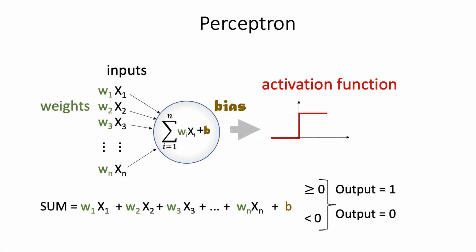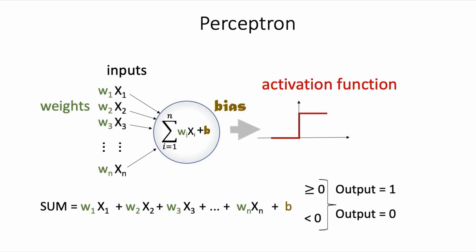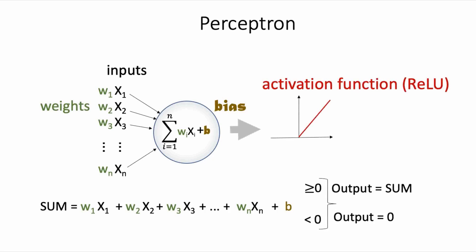In our examples, we mostly focused on the step activation function, which means that when the sum is greater than or equal to 0, the output will be a 1, and when the sum is less than 0, the output will be a 0. We also showed the ReLU, or Rectified Linear Unit, activation function, which is actually more commonly used in modern deep learning networks. The ReLU, like the step function, outputs a 0 when the sum is less than 0, but when the sum is greater than or equal to 0, ReLU outputs the sum itself.